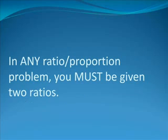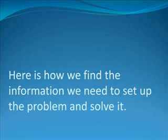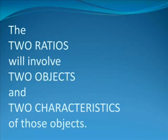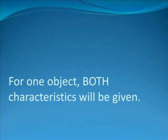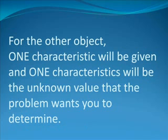In a ratio proportion problem, you must be given two ratios, although they may be disguised in the wording of the problem. The two ratios will involve two objects and two characteristics of those objects. For one object, both characteristics will be given. For the other object, one characteristic will be given and one will need to be found.